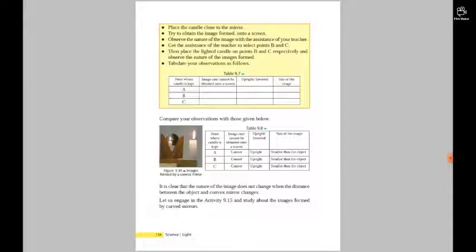Table 9.8 shows wherever the candle is kept, the image cannot be obtained on a screen, it's upright, and smaller than the object. It is clear that the nature of the image does not change with the distance between the object and the convex mirror. Remember that when convex mirrors are there, upright images form that cannot be obtained on a screen, smaller than the object, wherever it is.